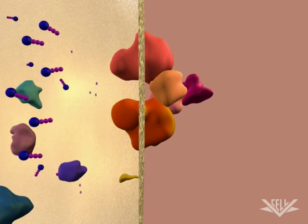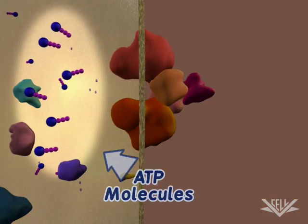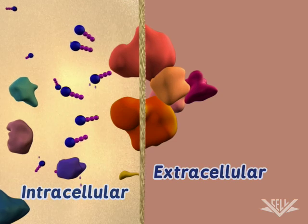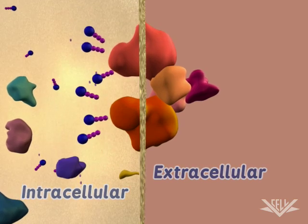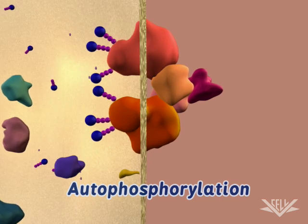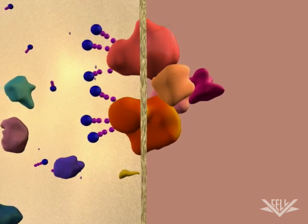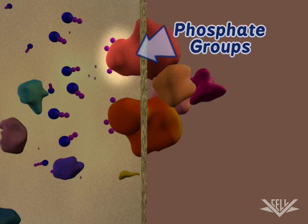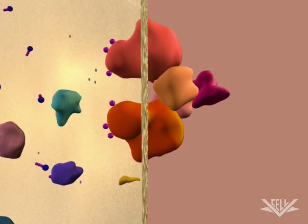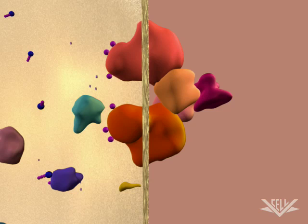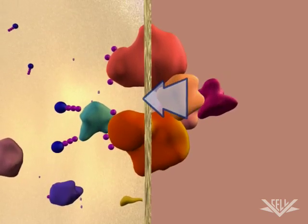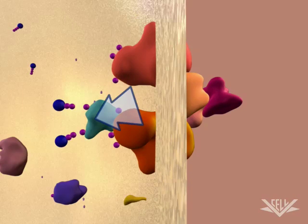Once the insulin binds to the receptor, phosphate groups are added to the intracellular domain of the receptor. Since the receptor itself adds the phosphate groups, the process is called autophosphorylation. This phosphorylation event sets off a cascade of molecular events, and the activated receptor protein then adds a phosphate group to another closely associated protein, effectively passing the signal to the next step in the pathway.